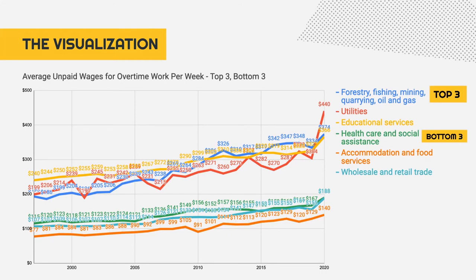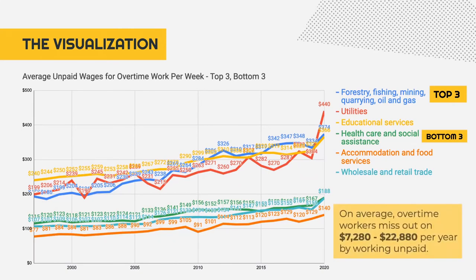To put it in another perspective, if we take the 2020 weekly values and turn them into yearly, on average, overtime workers miss out on $7,200 to over $22,000 per year by working unpaid. A final point to make is the focus here is on the dollar values rather than the amount of work hours.